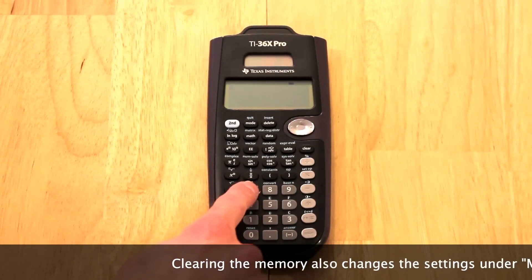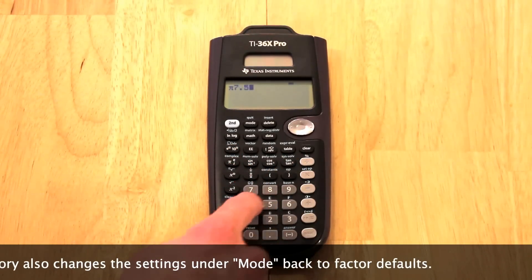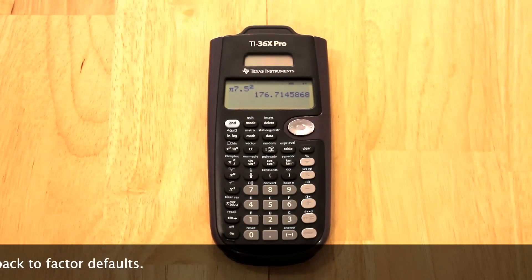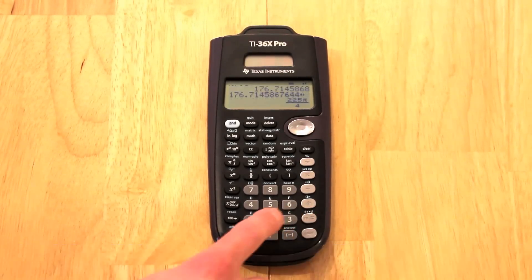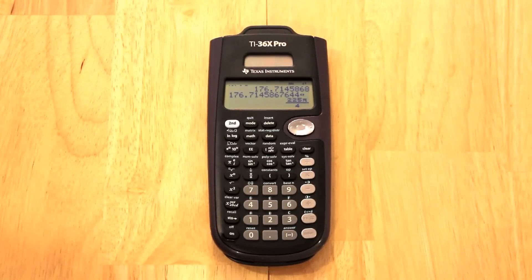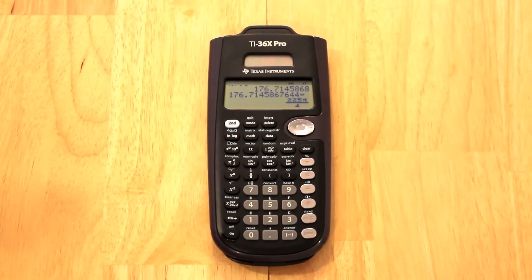And now if I go back to pi 7.5 squared, I get 176.7, that's correct. The fraction function, and now I'm back to 225 pi over 4, which is correct. And if I continue going from the fraction to decimal, it may give me the wrong answer at some point. I can't really say when or how that will happen, but it does happen on this calculator.